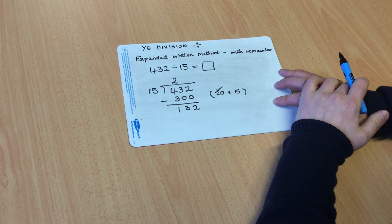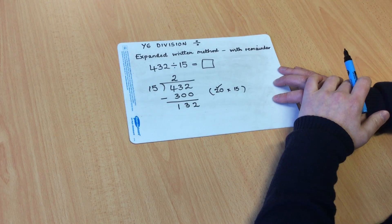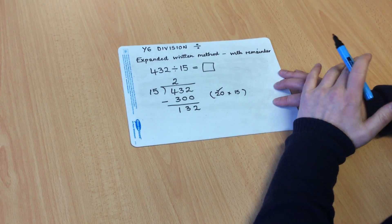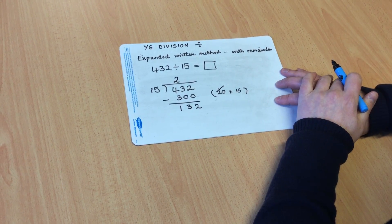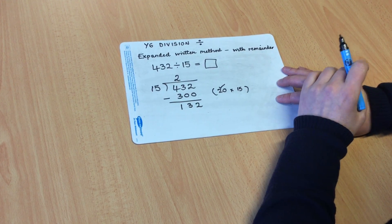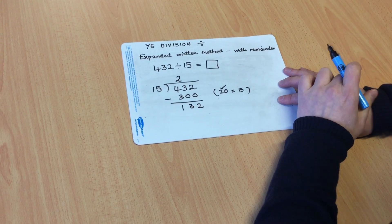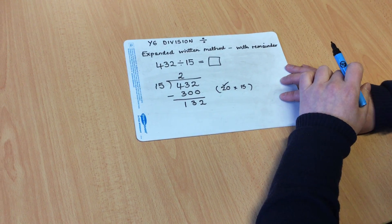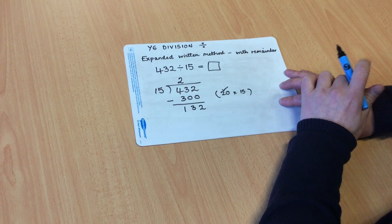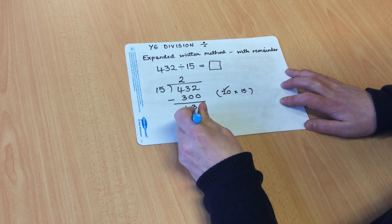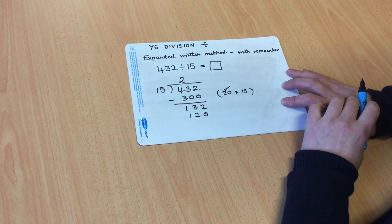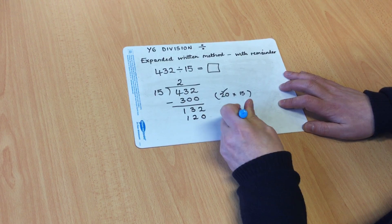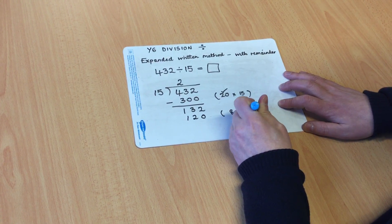My next question is, how many 15s in 132? Well I know that 15 doubled will be 30, if I double that again, that gives me 60, and that will be 4 lots of 15. And if I double that again, that will give me 120, which is 8 lots of 15. So I record 120 underneath, and at the side, 8 multiplied by 15.